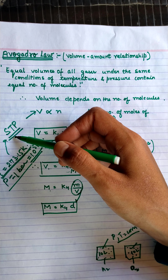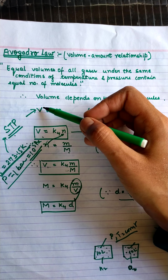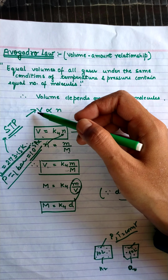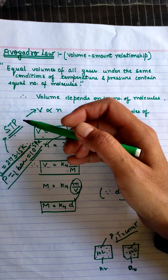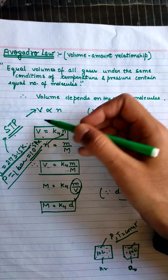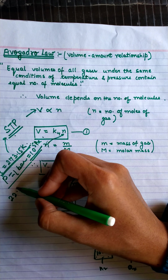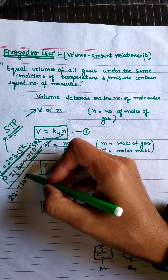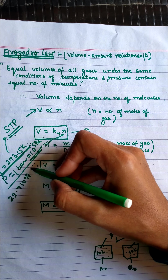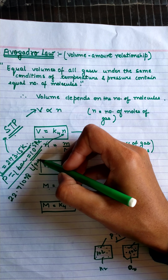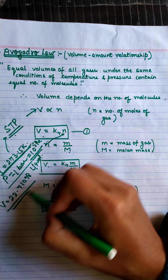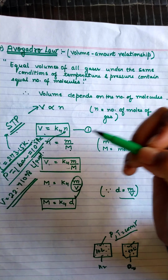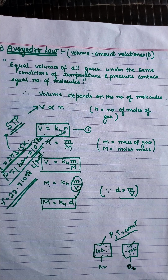When we calculate the volume of gas at STP conditions, for an ideal gas we get about 22.71 liters of gas per mole. This value is the molar volume at standard temperature and pressure.